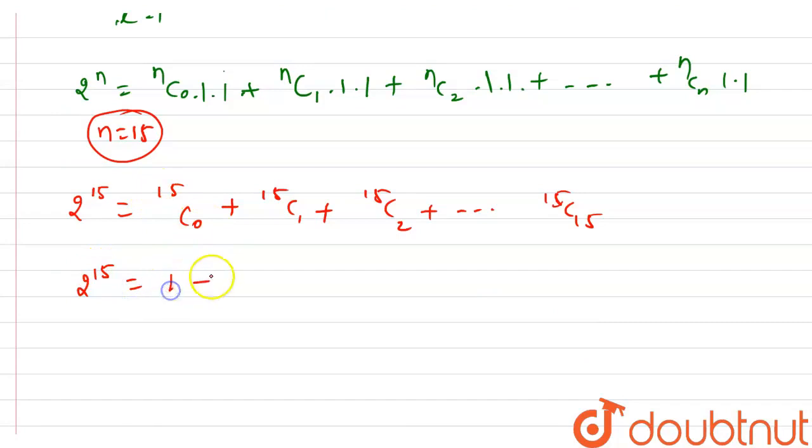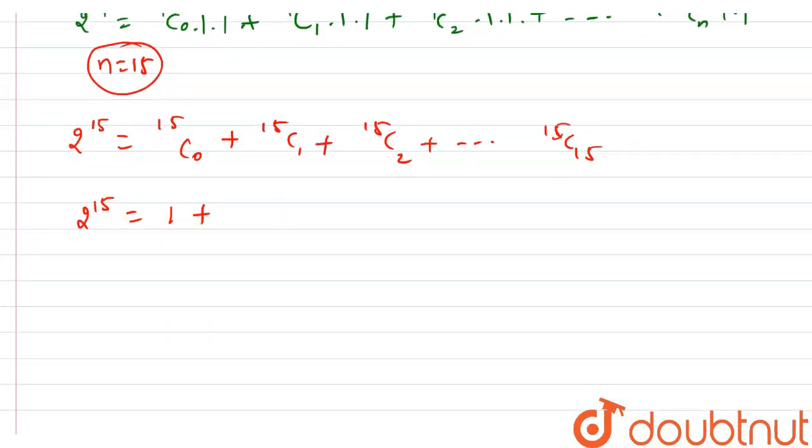Now as we all know, 15C0 is 1 only. How? Let me calculate for you. So it is 15C0, which is nothing but 15 factorial over 0 factorial times (15 minus 0) factorial. The formula is n factorial over r factorial times (n minus r) factorial. I just put the value here. So 15 factorial will cancel out this 15 factorial. 0 factorial is 1, so 1 over 1 is 1. That's why this is 1.